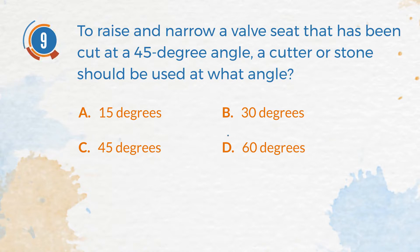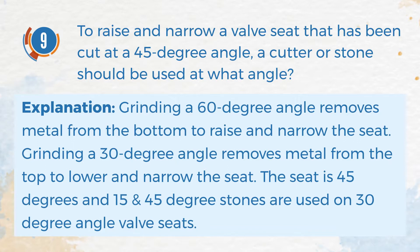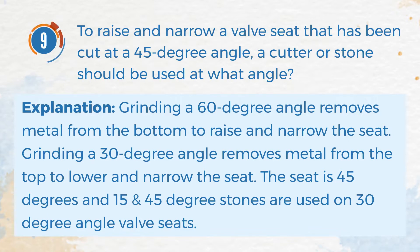The correct answer is D. 60 degrees. Explanation: Grinding a 60-degree angle removes metal from the bottom to raise and narrow the seat. Grinding a 30-degree angle removes metal from the top to lower and narrow the seat. The seat is 45 degrees, and 15 and 45-degree stones are used on 30-degree angle valve seats.